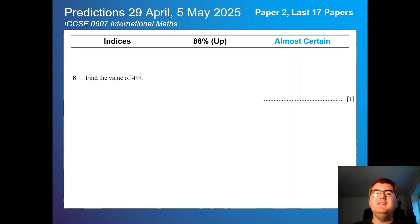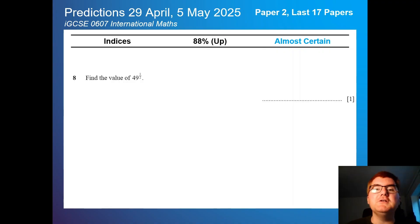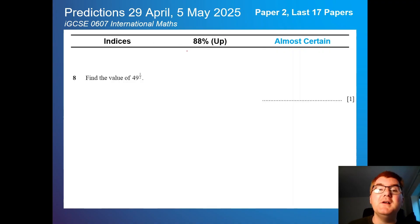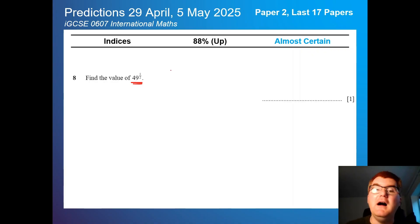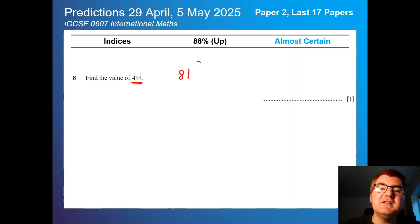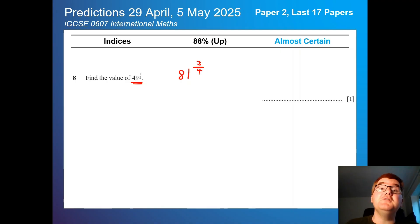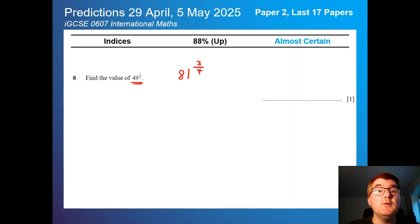Number one is indices. It's always been a popular topic at 88% — almost certain. Something like 49 to the power of a half, or they could ask you 81 to the power of 3 over 4. Make sure you know those indices rules for those 1 and 2 mark questions.